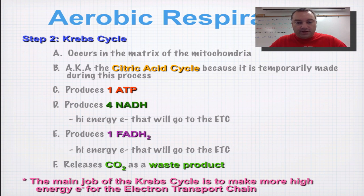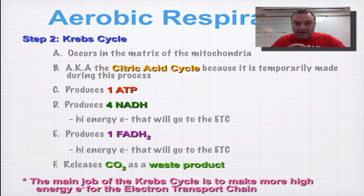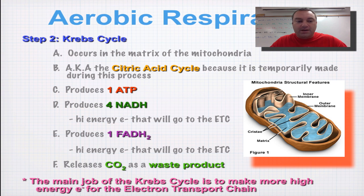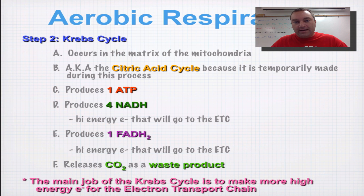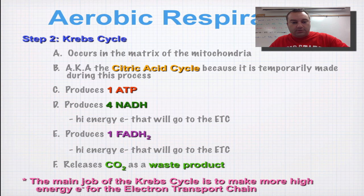The Krebs cycle occurs within the matrix of the mitochondria — that's the inner part of it. It's also known as the citric acid cycle because citric acid is made temporarily during the beginning of this cycle. I want you to pay attention to the products.